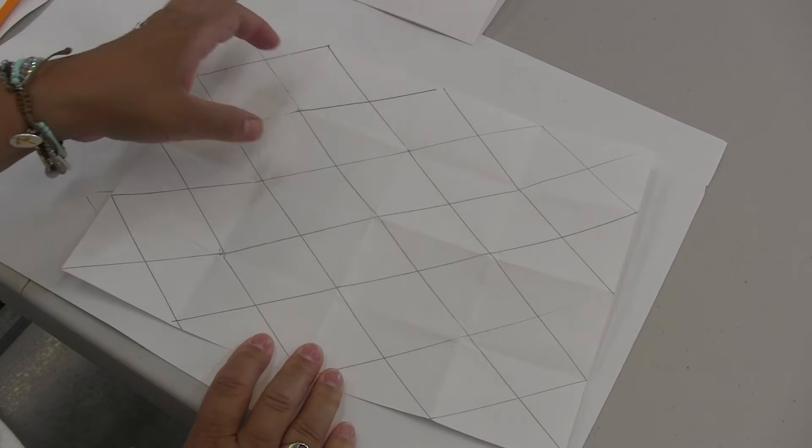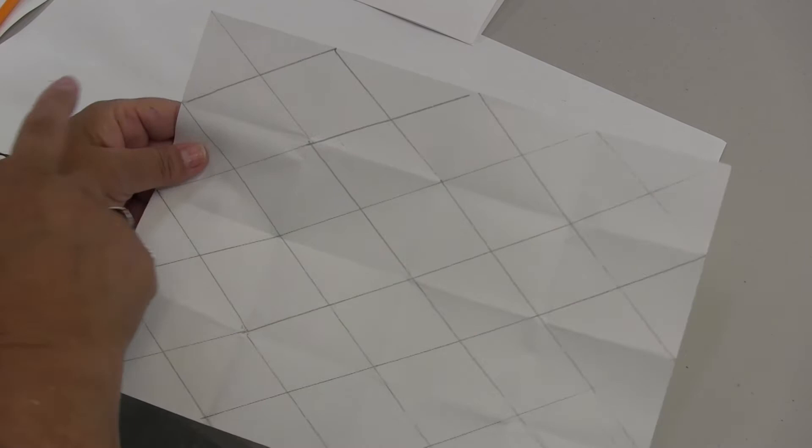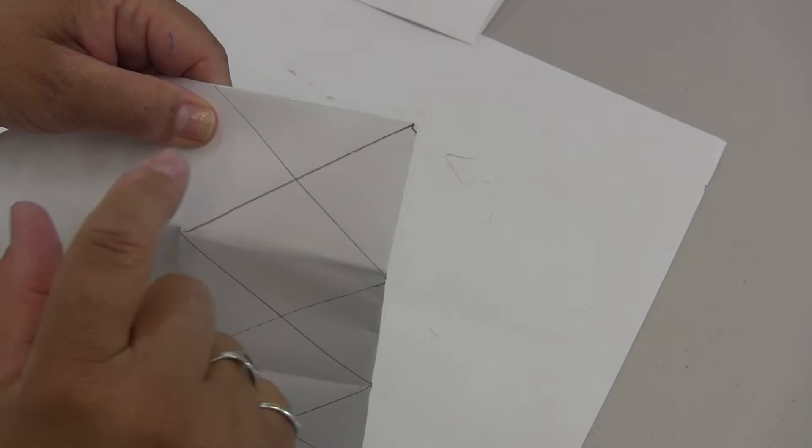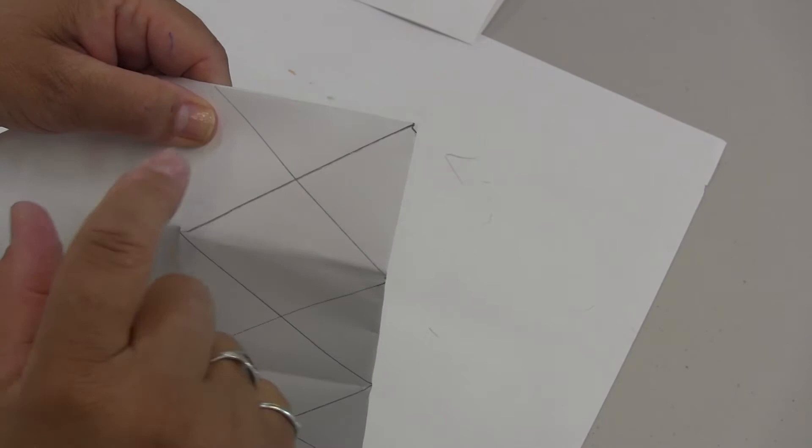We took our rectangle shape, we made an X, and now in each box we have four triangles. You see that? Each little box by itself has four triangles. We're going to put a different color in each triangle of every box.